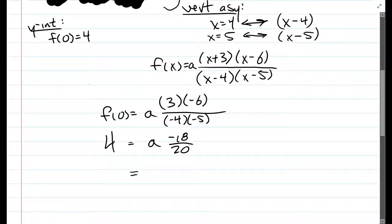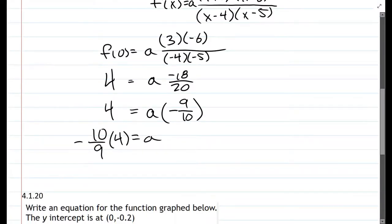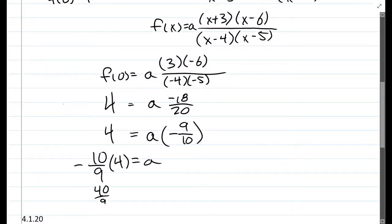Negative 18 over 20 can be reduced to 9 tenths. Just cut each of those numbers in half. They're both even. And we're almost done. We're going to multiply by the reciprocal of 9 tenths, which is 10 ninths, negative 10 ninths, times 4 equals a. And we can distribute the 4 into there. We get 40 ninths. Negative 40 ninths is a.